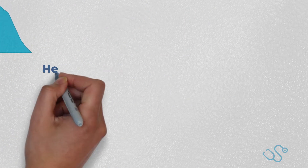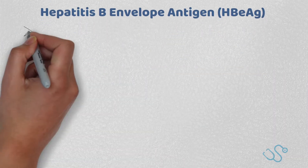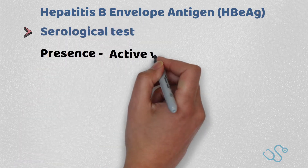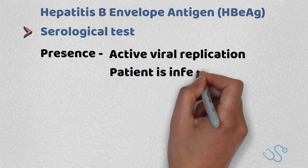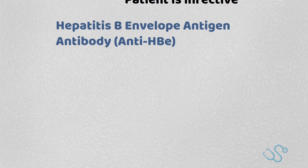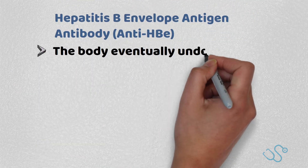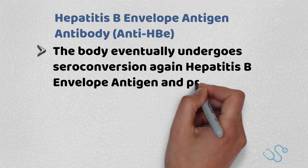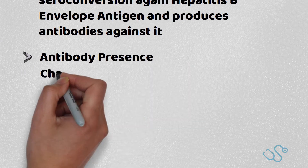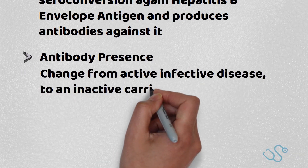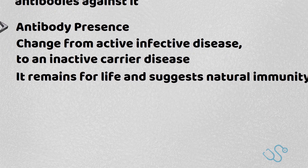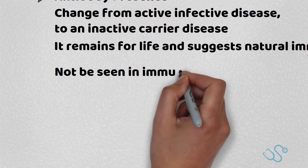The Hepatitis B envelope antigen. Its presence suggests active viral replication and that the patient is acutely infective. The Hepatitis B envelope antigen antibody is produced when the body undergoes seroconversion against the envelope antigen. Its presence suggests a change from active infection to an inactive carrier state. It remains present for life, suggests natural immunity, and would not typically be seen in immunised patients.